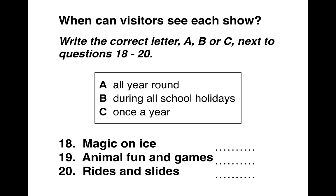Hopefully you got the answers. Let's see what they are. Magic on Ice was C — once a year — because it said two weeks during the Christmas holiday only. Then 19, Animal Fun and Games, was A — all year round — because it said it's open on Saturdays and Sundays during both term time and school holidays. And Rides and Slides was B — during all school holidays only, but not during term time. It said open when children are off school, but closed during the school term.